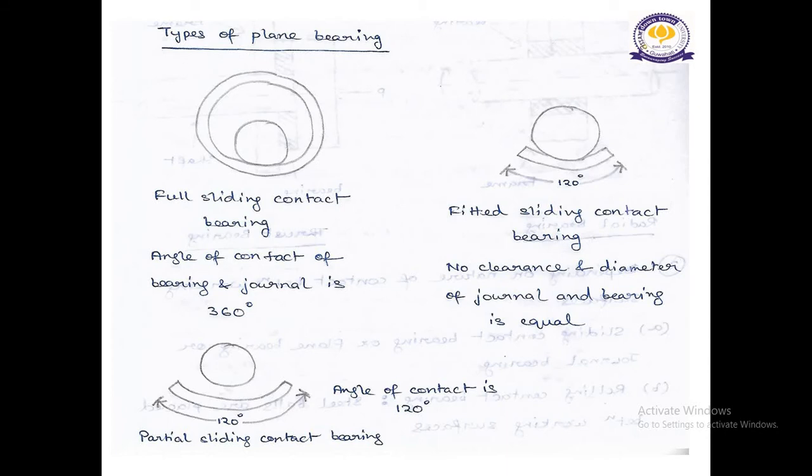Next, we move on to Types of Plane Bearing. Here you can see the three sketches. This is Full Sliding Contact Bearing, where Angle of Contact of Bearing and journal is 360 degree. Next, this is Fitted Sliding Contact Bearing, here, No Clearance and Diameter of Journal and Bearing is Equal. And this sketch is of Partial Sliding Contact Bearing, here, the angle of contact is 120 degree.